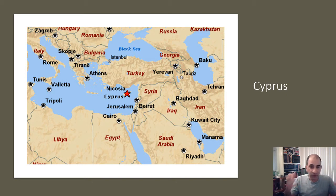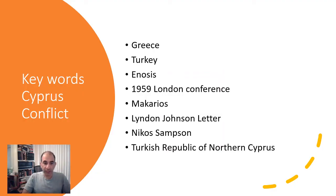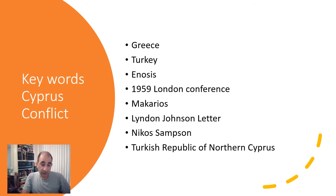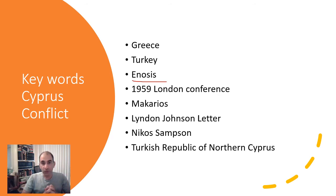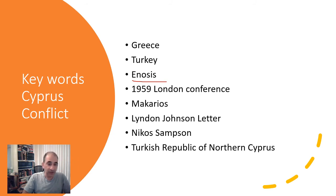There was a discussion of what to do with this island, and there was a really important movement. Here are the key words: Greece and Turkey are the two main parties. There's an idea known as Enosis, which literally means unification. There was a big movement, both in Greece and for many people in Cyprus, that Cyprus should be part of Greece because the majority of people there were Greeks. But Turkey was very upset about this and didn't want Cyprus to be part of Greece given how close it was. This led to a conference in 1959 — the London Conference.